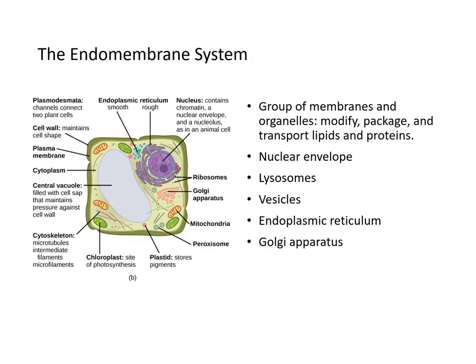The endomembrane system is made up of a whole bunch of membrane-containing organelles that modify, package, and transport lipids and proteins. They start with the nuclear envelope and include lysosomes, various vesicles, endoplasmic reticulum, and the Golgi apparatus. Here's the nuclear envelope and the rough ER surrounding it. The Golgi apparatus processes and packages various proteins, and some vesicles can be seen here.